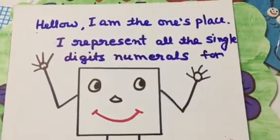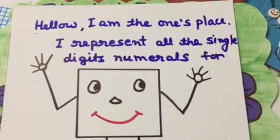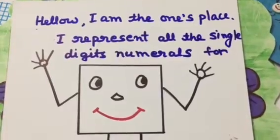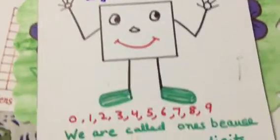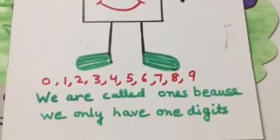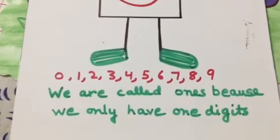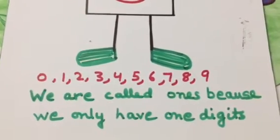Hello, I am the 1's place. I represent all the single digit numerals: 0, 1, 2, 3, 4, 5, 6, 7, 8, 9.